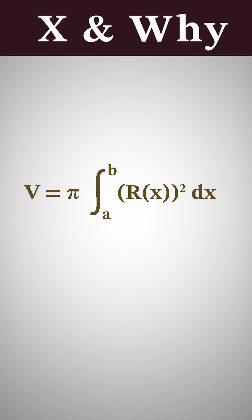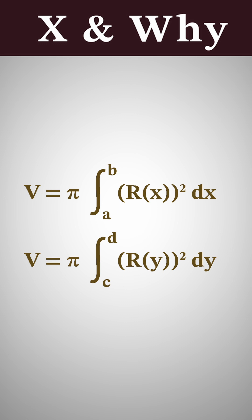For a function with a horizontal axis of revolution, the formula is: volume equals pi times the integral from a to b of the radius of x squared, dx. For a function with a vertical axis of revolution, the formula is: volume equals pi times the integral from c to d of the radius of y squared, dy.